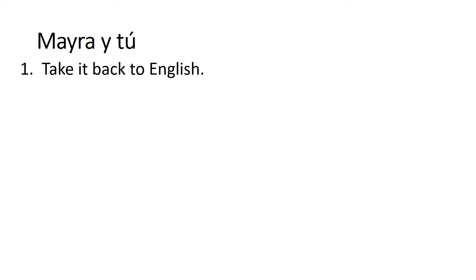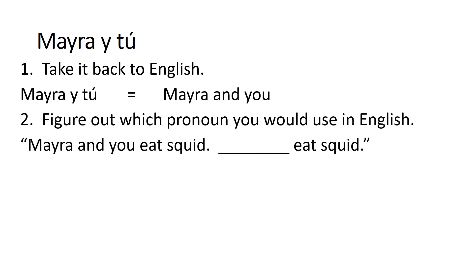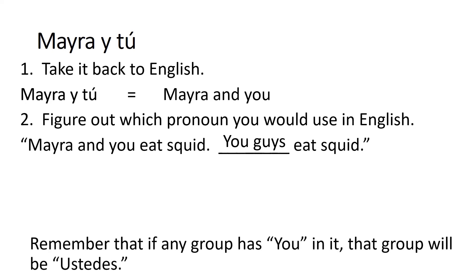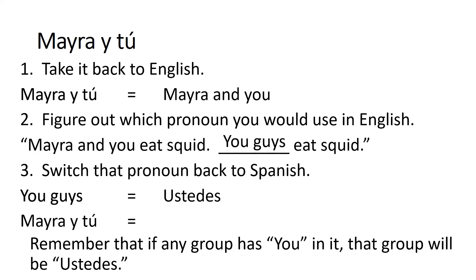Let's try another one. Let's say you got Mayra y tú. Let's take it back to English — that would be Mayra and you. Now that you got it in English, what pronoun would you use in English to talk about Mayra and you? Mayra and you eat squid — you guys eat squid. Or if you're in the South, you might say y'all eat squid. Just remember, any group that has 'you' in it will be 'you guys' and you'll use ustedes. Switch it back to Spanish — 'you guys' in Spanish would be ustedes. That means any time you got a sentence where Mayra y tú are doing the verb, you're gonna use the ustedes form of the conjugated verb.